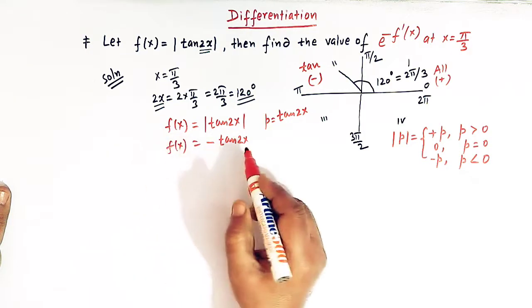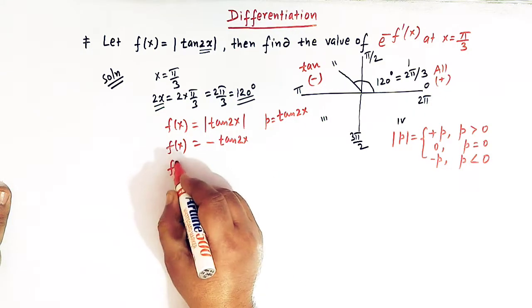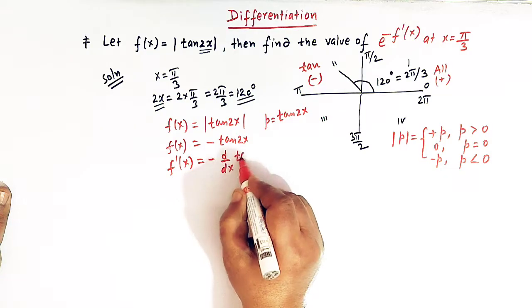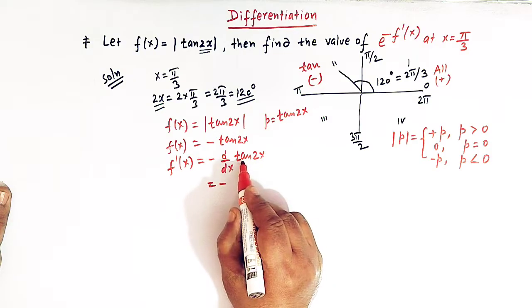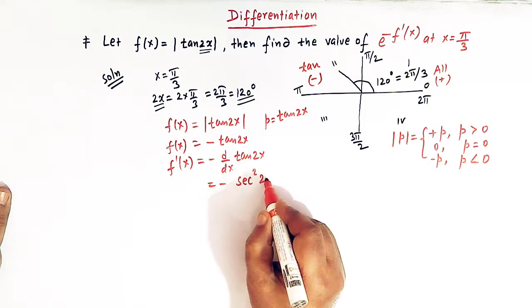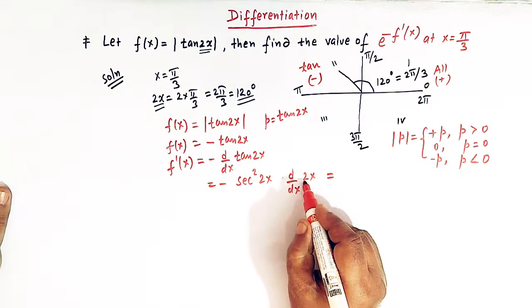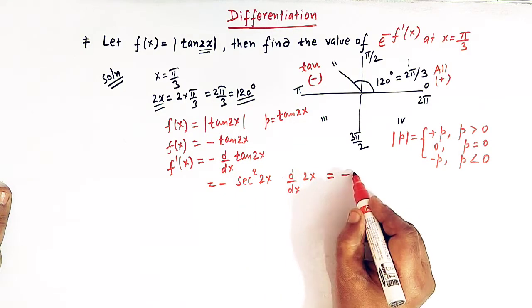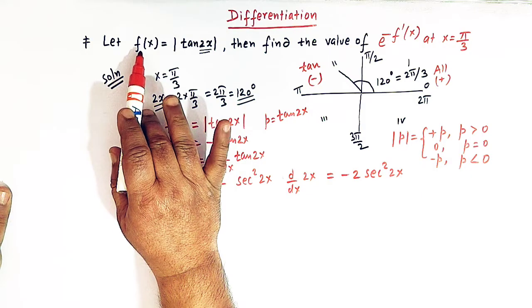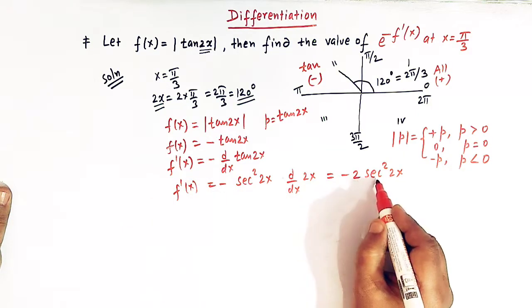So we have f(x) equal to negative of tan(2x). Differentiating with respect to x, f prime of x equals negative of the derivative of tan(2x). The derivative of tan is secant squared, so we get negative secant squared(2x), and by the chain rule the derivative of 2x is 2. Therefore f prime of x equals minus 2 secant squared(2x).